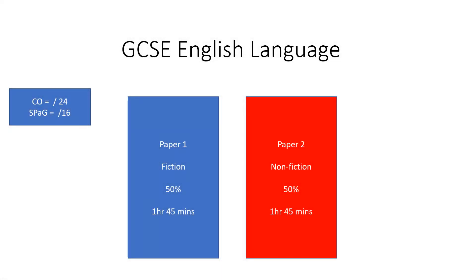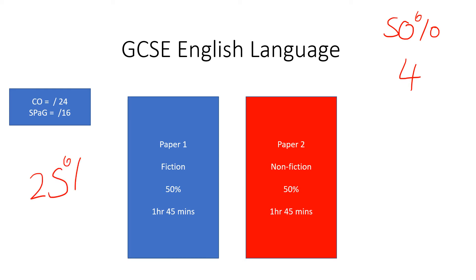This video is going to take you through Paper 1 Question 5. To start off with, I want to draw attention to how important the writing tasks are. You have two exam papers that make up the whole of GCSE English Language, and you are looking roughly to get 50% to get a grade four. The writing tasks are worth 25% each in terms of the overall GCSE papers.